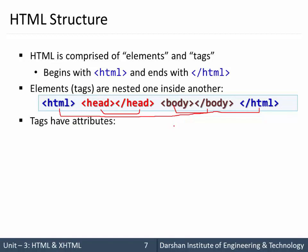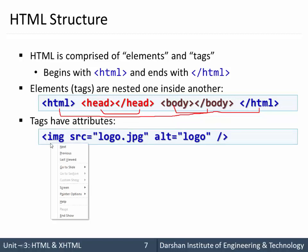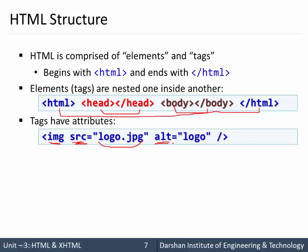Tags can have attributes. For example, the img tag has one attribute called src, and that src holds a value which is the path to our image. We can have more than one attribute — for the same img tag we can also have an attribute named alt, which is the alternate text displayed if the image is not found at that path.